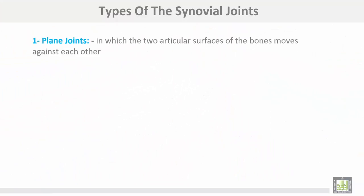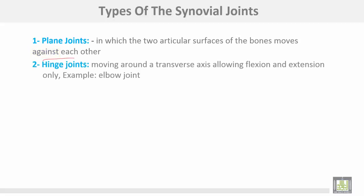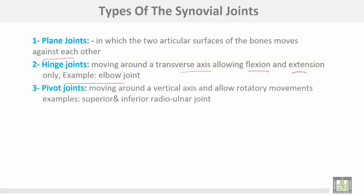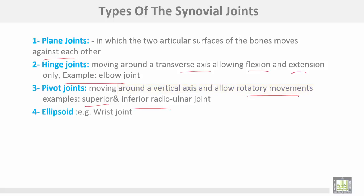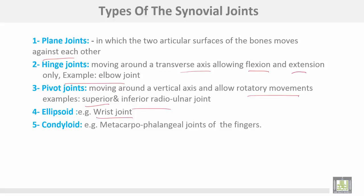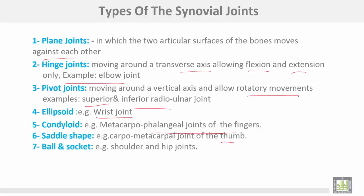The seven types of synovial joints: number one, plane joints, where the two articular surfaces move against each other; number two, hinge joints, moving around the transverse axis allowing flexion and extension only, example the elbow joint; number three, pivot joints, where one bone moves around a vertical axis allowing rotatory movements, examples the superior and inferior radioulnar joints; number four, ellipsoid joints, with an elliptical articular surface, example the wrist joint; number five, condyloid joints, example the metacarpophalangeal joints of the fingers; number six, saddle-shaped joints, example the carpometacarpal joint of the thumb; number seven, ball and socket joints, the most important type, examples the shoulder and hip joints.